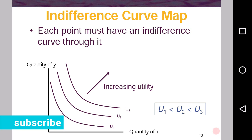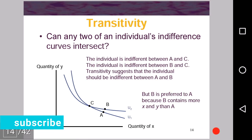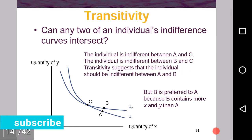As we move to higher indifference curves from u1 to u2 to u3, the utility level is increasing. Along any single curve the utility level is the same, but as we move to a higher curve the utility level increases. Now, regarding transitivity — as we have seen in the axiom of rational choice — how can we show transitivity with the help of an indifference curve? There is a property of indifference curves that two indifference curves can never intersect.